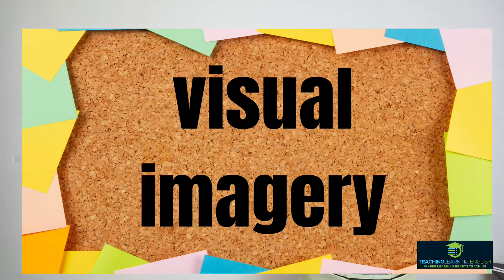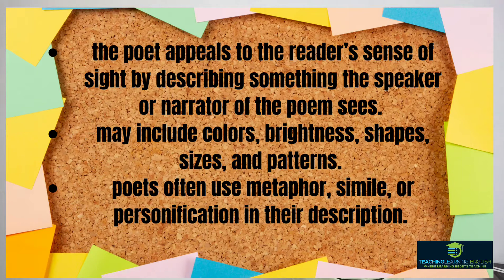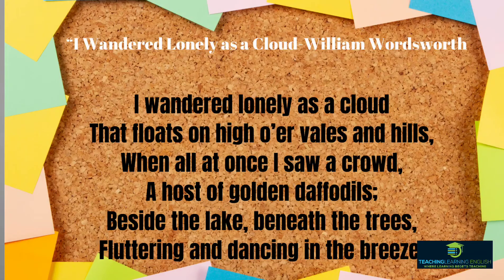The first is visual imagery. In this form of poetic imagery, the poet appeals to the reader's sense of sight by describing something the speaker or narrator of the poem sees. It may include colors, brightness, shapes, sizes, and patterns. To provide readers with visual imagery, poets often use metaphor, simile, or personification in their description. This is one of the best examples of visual imagery.